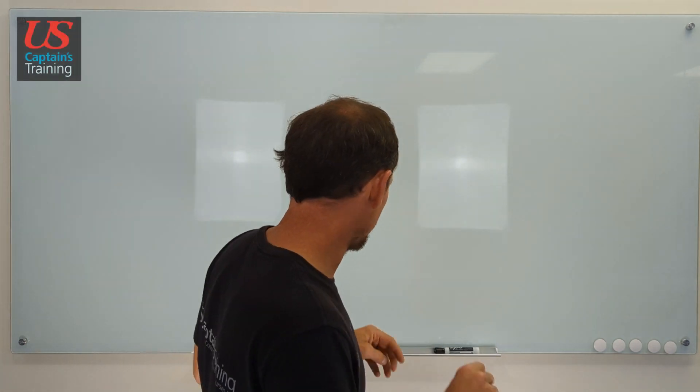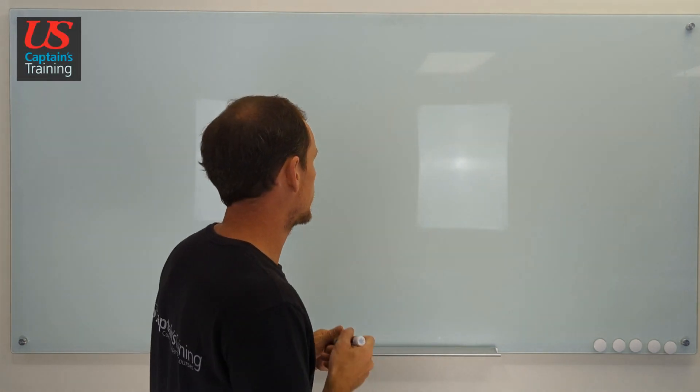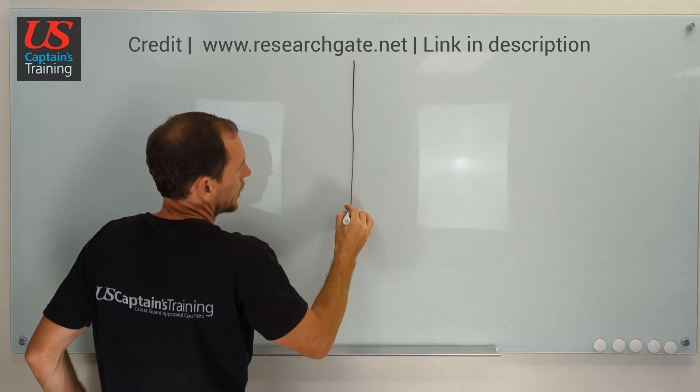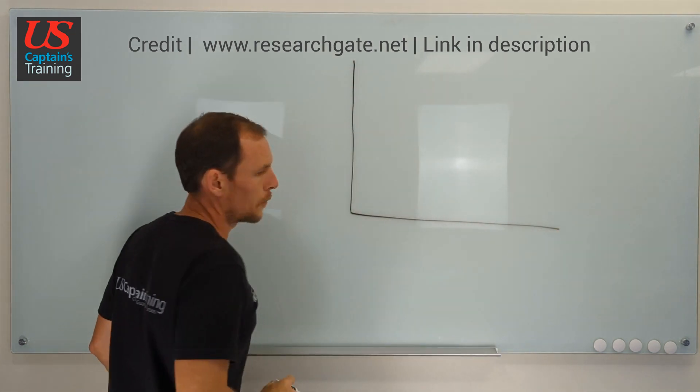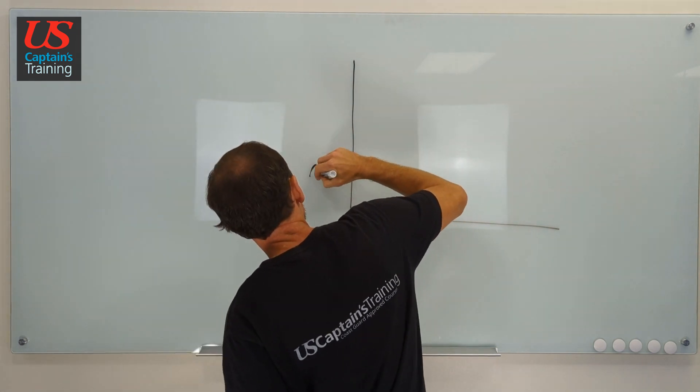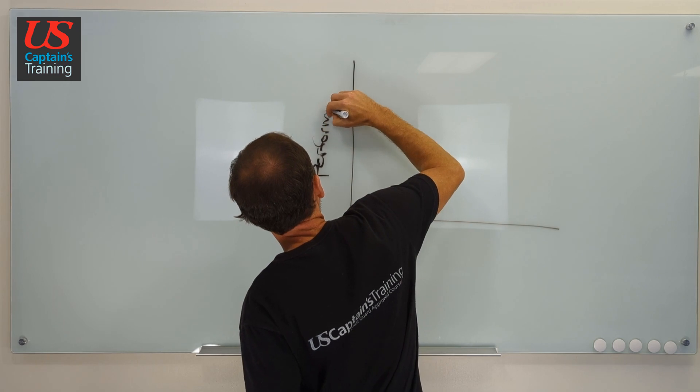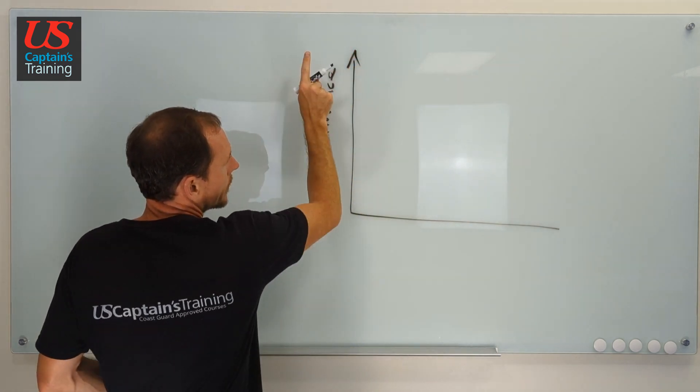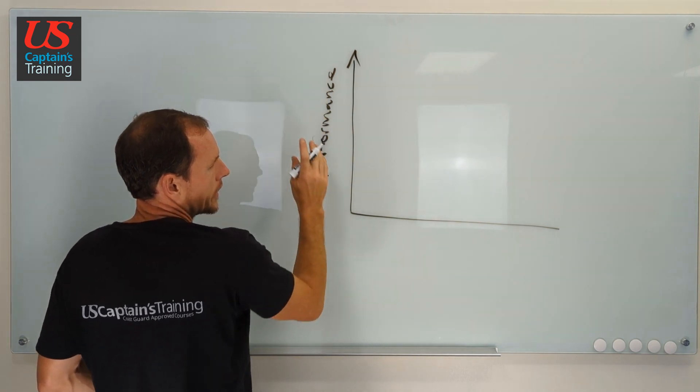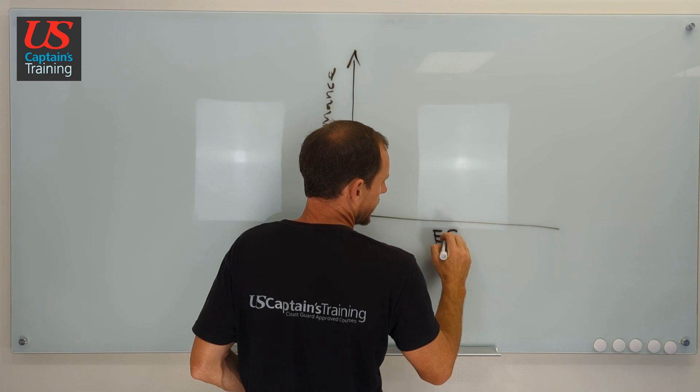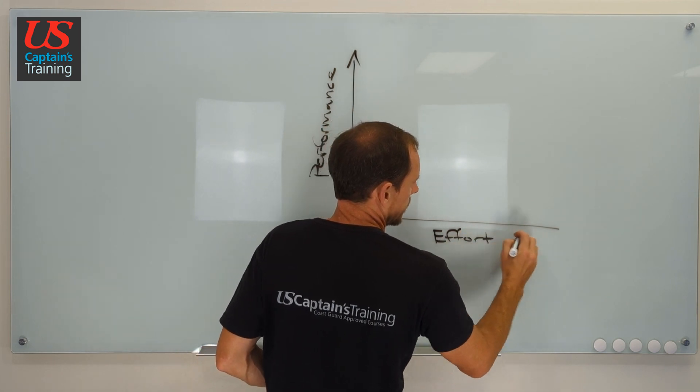Let's take a look at this learning curve because I find it fascinating. So we have just your regular graph, and we have performance. Your performance with the information can go up, and then this is effort to gain the information. It goes this way.